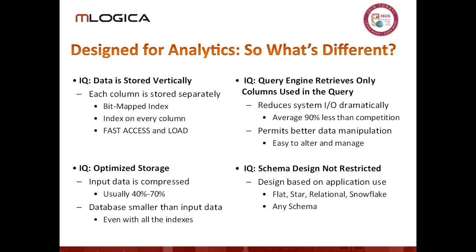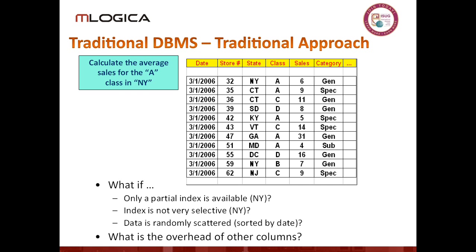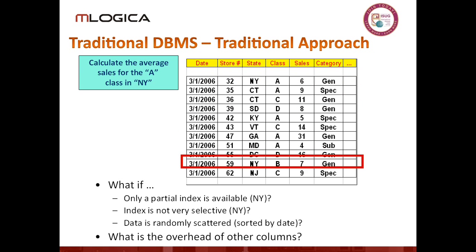IQ has no restrictions — it could be a star relational schema or a snowflake schema. One very important benefit of IQ and column databases in general is that you can add new columns to an existing table without any performance penalty. It is completely natural to add or remove a column. If you want to process analytical work using conventional row-oriented databases, you have to actually start scanning most of the columns.